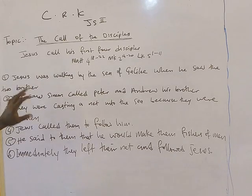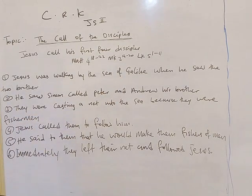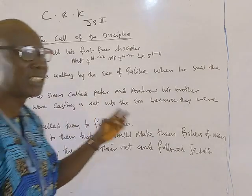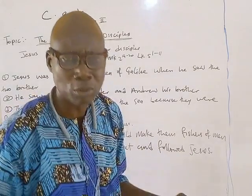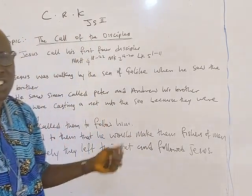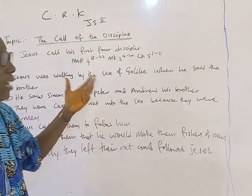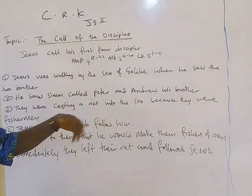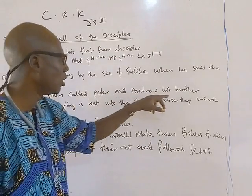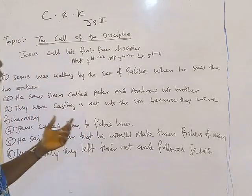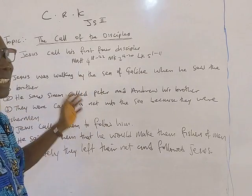Jesus was walking by the Sea of Galilee, where he saw two brothers. It was after the temptation of 40 days and 40 nights, that the devil could not, with all his antics, overpower Jesus or have victory over him. But after the victory that Jesus had over the devil, he left that place and was going to Galilee. He saw Simon called Peter, and Andrew, his brother.